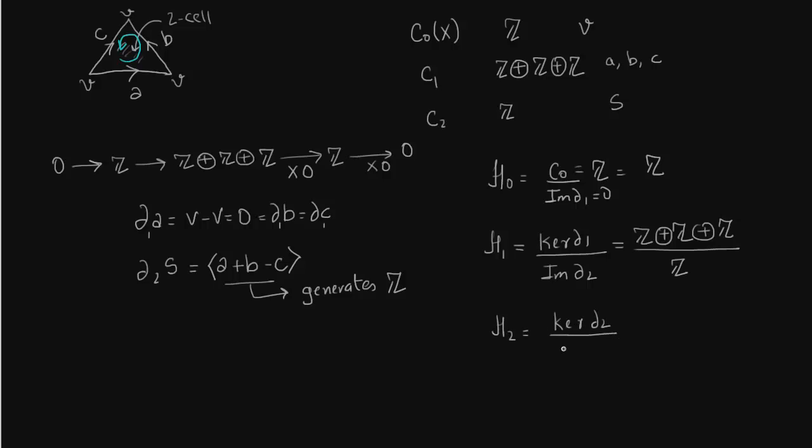What about H2? This is kernel of delta 2 over image of delta 3. What is kernel of delta 2? It is just 0. Because you just get this entire Z embedded into Z plus Z plus Z. So you need to understand that this is actually nothing but a rank nullity theorem. It is an injective map. Therefore the kernel is 0. It took the surface and reduced it to the combination of edges.